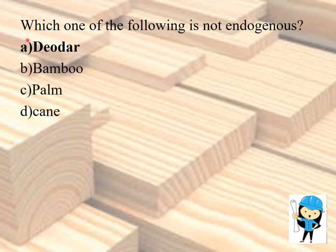The first question is: which one of the following is not endogenous? Option A: Deodar, Option B: Bamboo, Option C: Pom. The answer is Deodar. Endogenous means the tree grows inward, whereas exogenous means the tree grows outward.